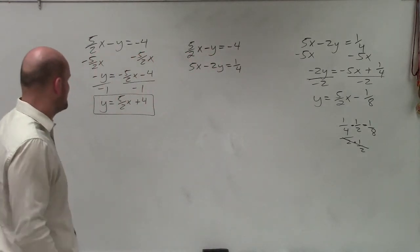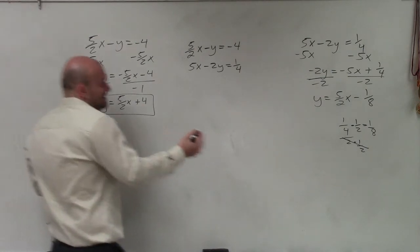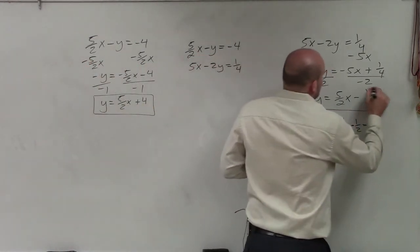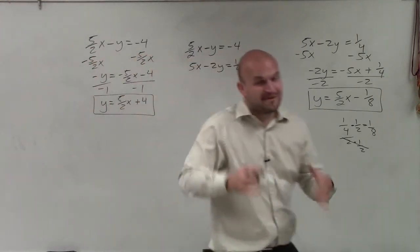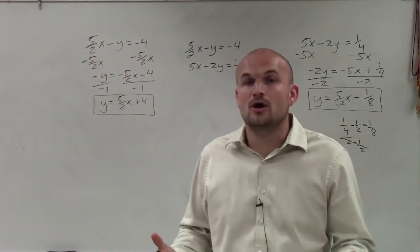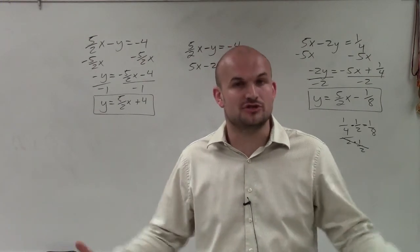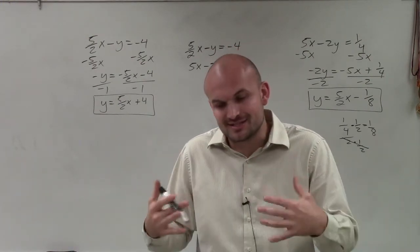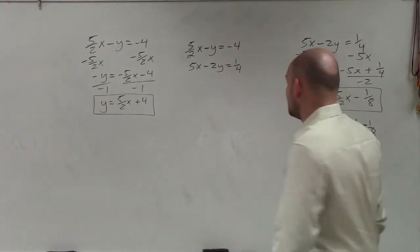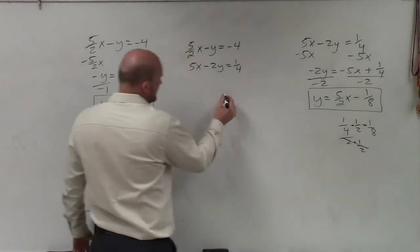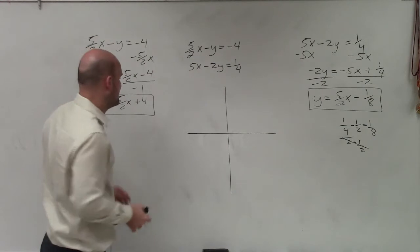All right. So now I need to graph these two points and kind of see what they have. But before I even get to them, I notice that these two equations with all these fractions have exactly the same slope. And if they have exactly the same slope, we know that they're never going to intersect. Therefore, we have an inconsistent solution, or you might even say an inconsistent system and no solution to our equation. But let's have a little fun and just kind of see what these graphs would look like, just to kind of verify.